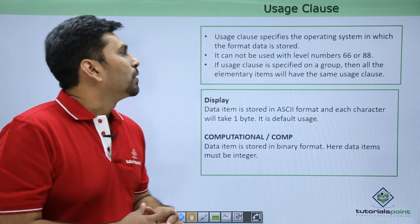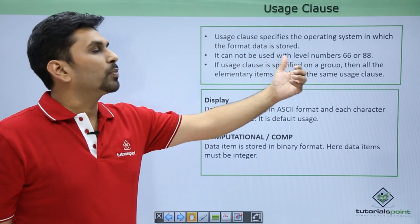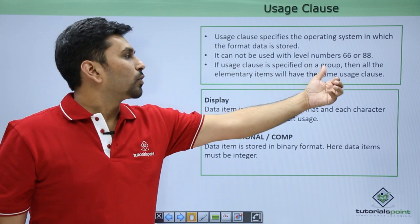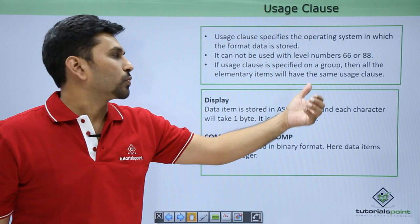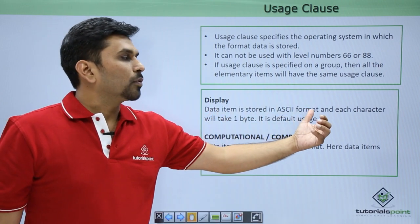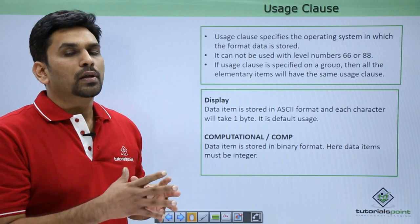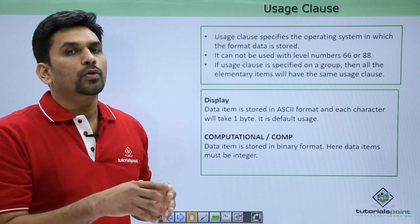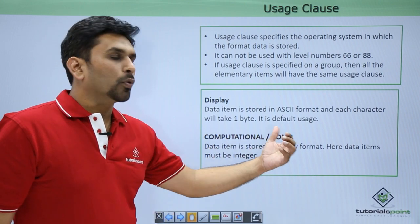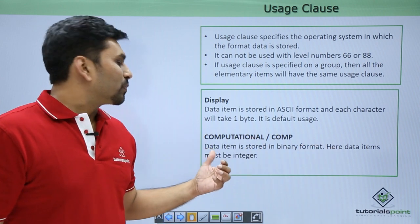Next is the usage clause. The usage clause specifies the format in which data is stored by the operating system. It cannot be used with level number 66 or 88. If a usage clause is specified on a group item, all elementary items will have the same usage clause. We have different usage types: DISPLAY stores data in ASCII format and each character takes 1 byte — so a variable declared as PIC 9(5) with DISPLAY usage will take 5 bytes. Then we have COMP (computation), where data is stored in binary format and data items must be integers.